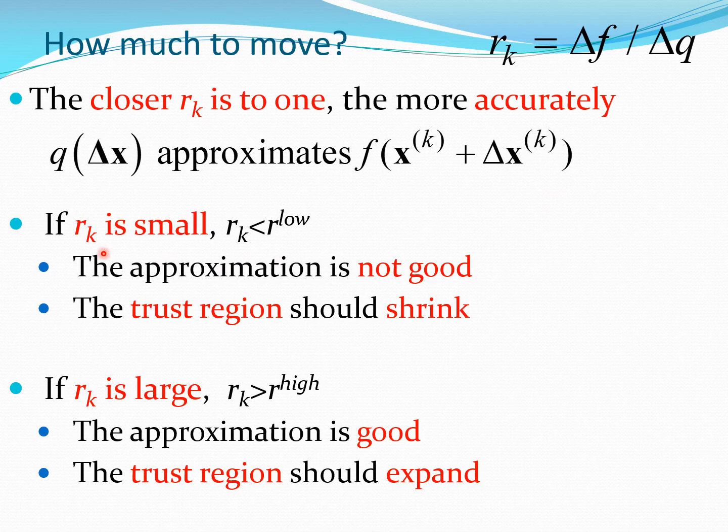Now if rk is small so let's say rk is lower than some prescribed value r low then the approximation is not good and therefore you need to shrink the trust region essentially reduce the trust region size. If rk is large that is rk is greater than some prescribed value r high then the approximation is good and the trust region should be permitted to expand in size. So these are the two possible cases which you get and again the choice of this r low and r high is necessary here to guide the trust region method.